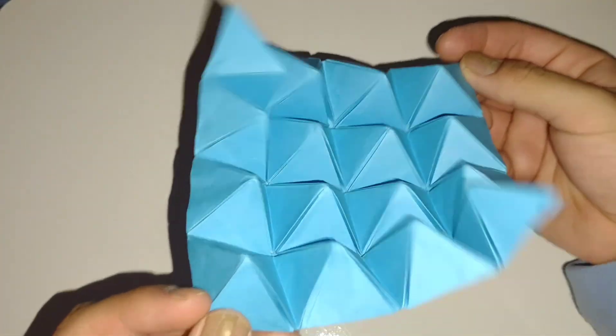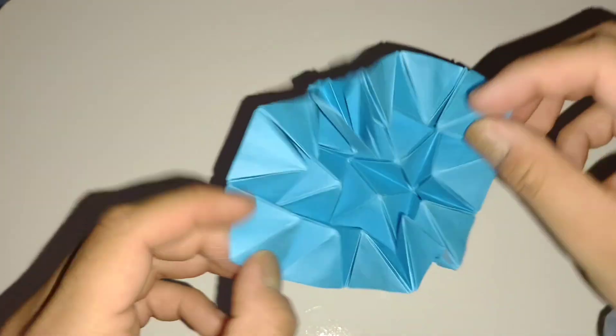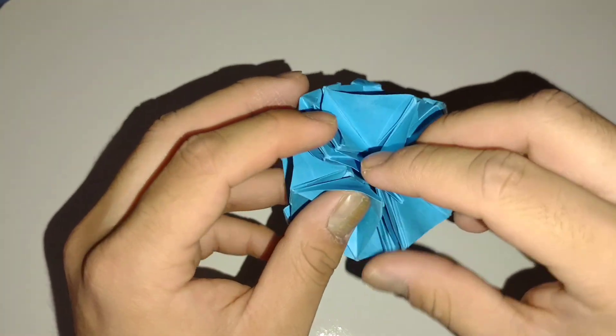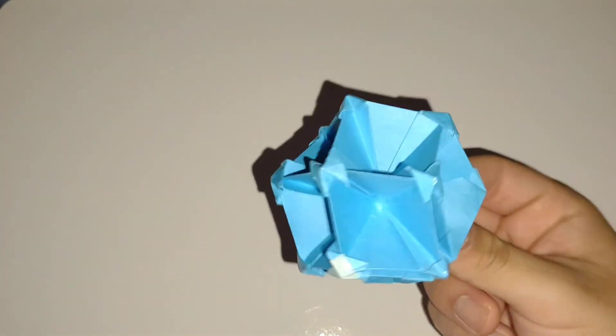And it can flap like this, and it can also—let me see if I can bring these together—it becomes like a ball, a spiky ball or something like that.